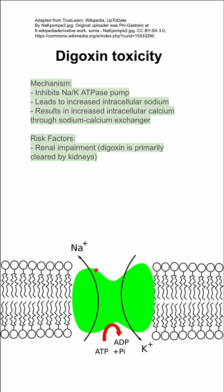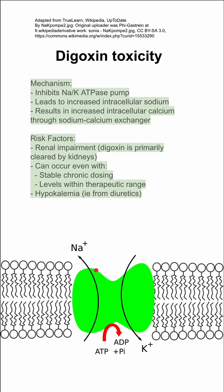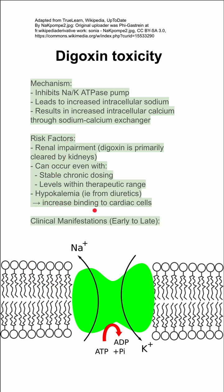Some risk factors for digoxin toxicity: renal impairment, since digoxin is primarily cleared by the kidney, and digoxin toxicity can even happen with stable chronic dosing with levels within the therapeutic range. Another risk factor is hypokalemia, such as that caused by some diuretics, which leads to increased binding to cardiac cells.